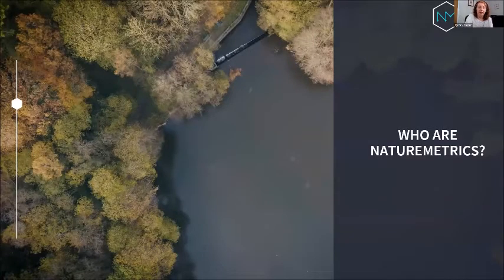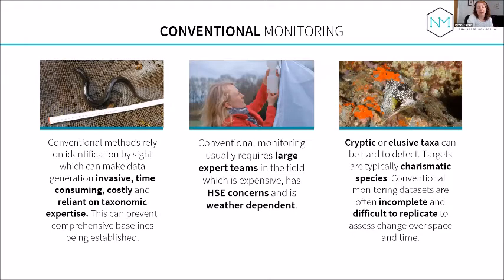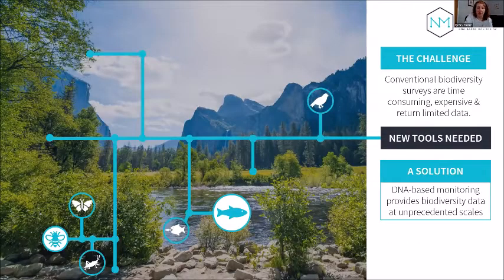Nature Metrics addresses the limitations of conventional biodiversity monitoring, which relies on identification by sight, making data generation invasive, time-consuming, costly, and reliant on taxonomic expertise. Conventional monitoring requires large expert teams — sometimes different teams for different taxa — is weather dependent, and struggles to detect cryptic or elusive taxa. As a result, datasets are often incomplete and difficult to replicate to assess change over space and time.